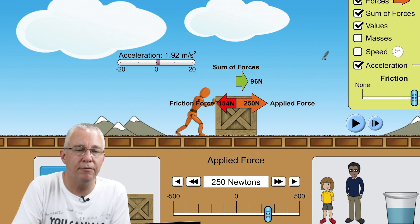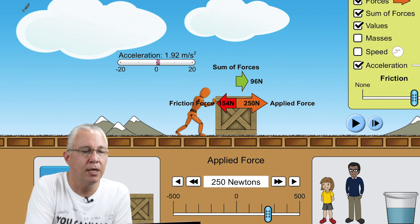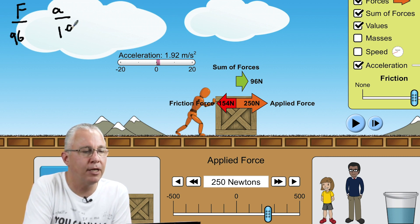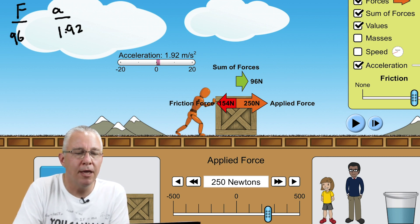And what we're going to do is we're going to use that for the moment because we're going to use that to establish our relationship. So we're going to have our force over here and we're going to have our acceleration here, and in this case we have a sum total of 96 newtons. I'll leave the units off for the moment and a value of 1.92 over here. So that's what the acceleration is.